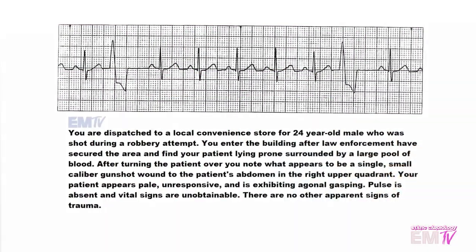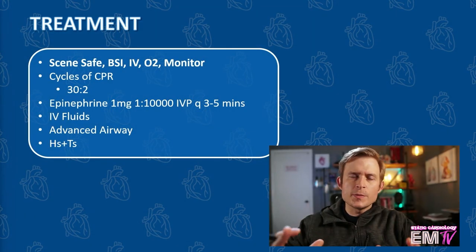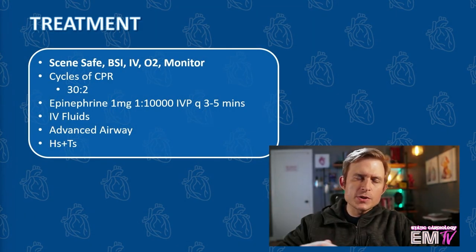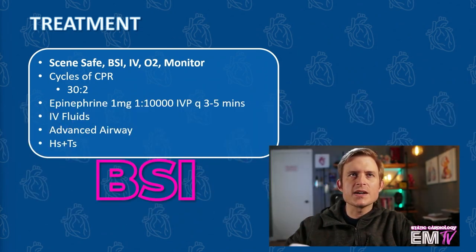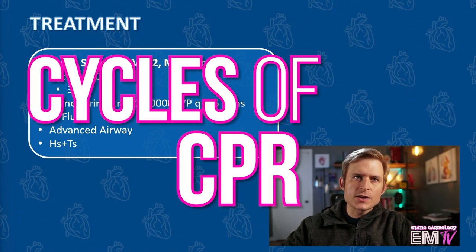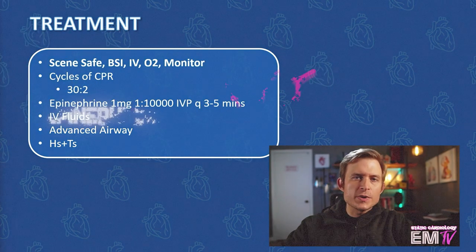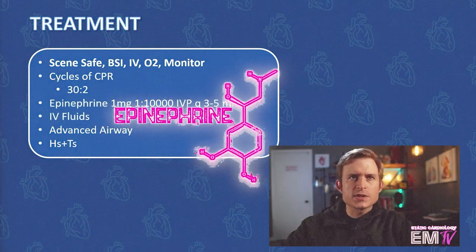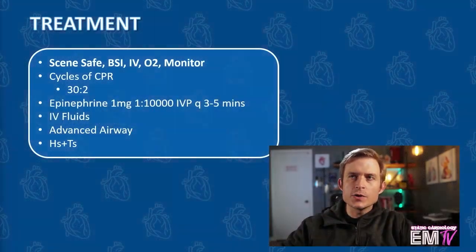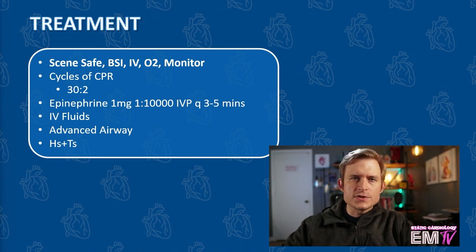Let's go ahead and move on to the treatment. Just like with all of my other Static Cardiology cards, I'll begin treatment by regurgitating the mantra: scene safe, BSI, IV, O2, monitor. As this patient is pulseless, I'll then begin cycles of CPR with a 30 to 2 compression-ventilation ratio, and then I'll be giving epinephrine — one milligram of 1 to 10,000 concentration IV push — every three to five minutes. And remember, this is a non-shockable rhythm, so I won't need to be providing anything like defibrillation. I'll then consider IV fluids and an advanced airway.